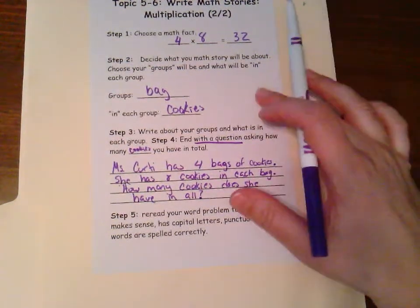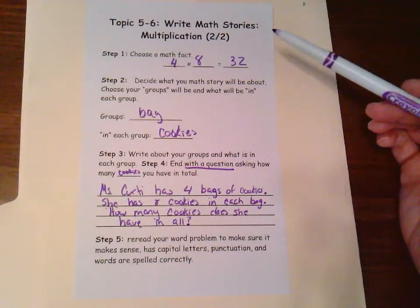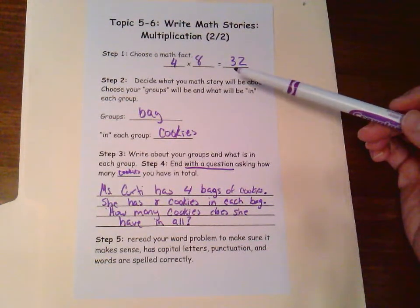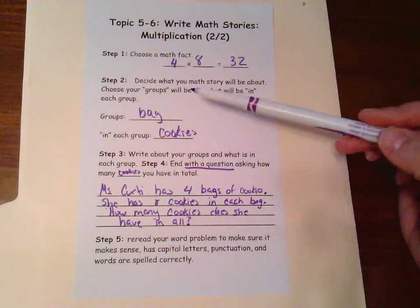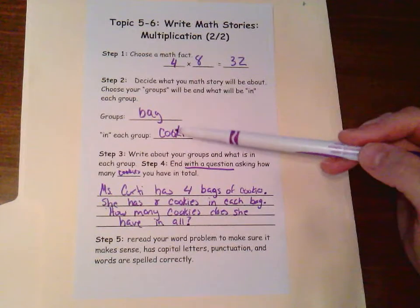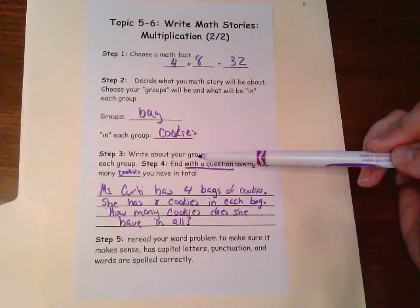So just to recap, sometimes you'll be given a fact, and I'll ask you to write a word problem for that fact. Other times, you'll be able to choose your fact. So once you have your fact, decide what your story is going to be about. And again, there are so many options. You can always keep it simple and talk about cookies and bags, but the choice is yours.